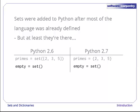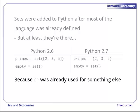However, in both versions, you have to call set with no arguments to create an empty set. Because when sets were added to the language, empty curly braces, the mathematical notation for an empty set, were already being used for something else, which we'll see in a couple of episodes.